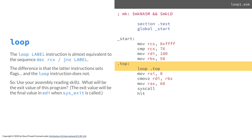Remember loop? The loop label instruction is almost equivalent to DEC RCX, jump not zero to label. The difference is that the DEC RCX instruction sets flags, but the loop instruction does not. It still compares RCX to zero but doesn't set any flags. Look over the code on the right. Use your assembly reading skills and tell me what is the exit value of this program — the final value will be in EDI when syscall exit is called. Go ahead and pause here and take some time to look at it.